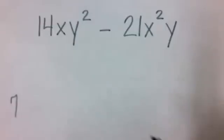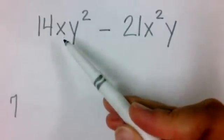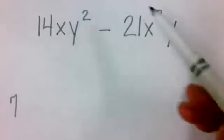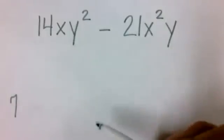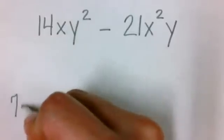Let's also take a look at the variables. Notice that this term has one x, and this one has x to the second. So each one at least has an x.